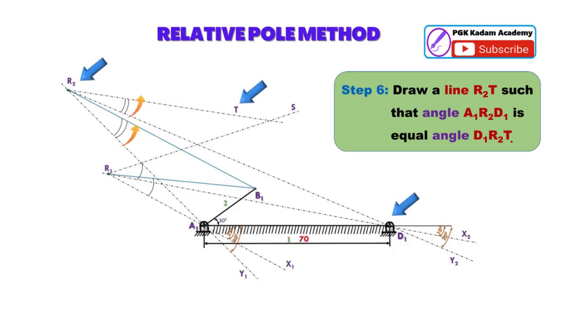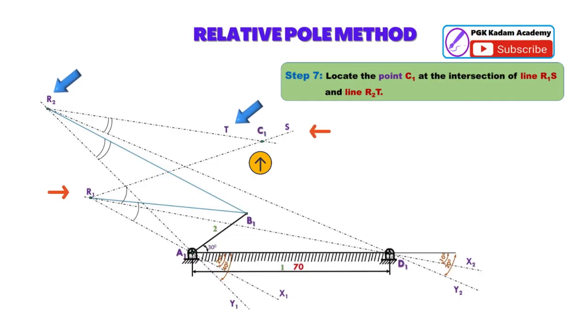Step 6: Draw a line R2T such that angle A1R2D1 is equal to angle D1R2T.